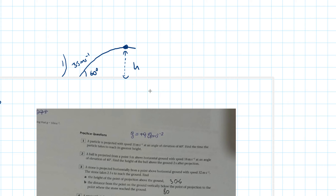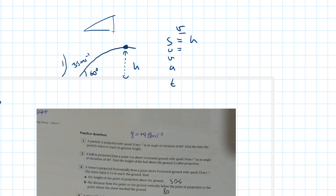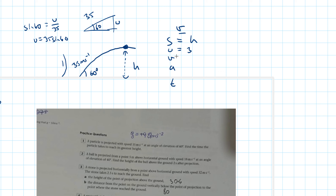We consider only the vertical component and write SUVAT. For s, we want the maximum height h. For our initial speed u, we use the vertical component only, so we apply sine: sine 60 equals u over 35, therefore u equals 35 sine 60. So the vertical component of the initial speed is 35 sine 60.